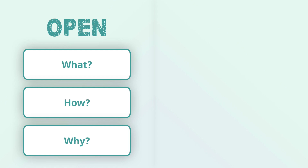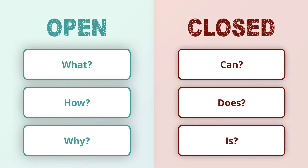Structure the problem using open questions. What is an open question? It's a question that begins with 'what,' 'how,' or 'why' — for example, 'what are the most effective sales channels?' or 'how can we reduce overhead costs?' As opposed to a closed question, which begins with 'can,' 'does,' or 'is' — for example, 'can the company lease additional planes?' or 'does the client have a loyalty program?' These closed questions can be answered with a single word, whereas an open question cannot.